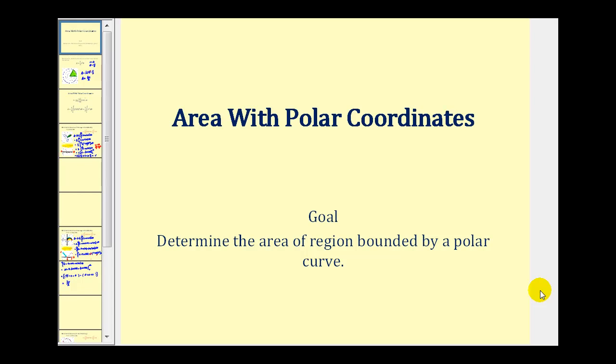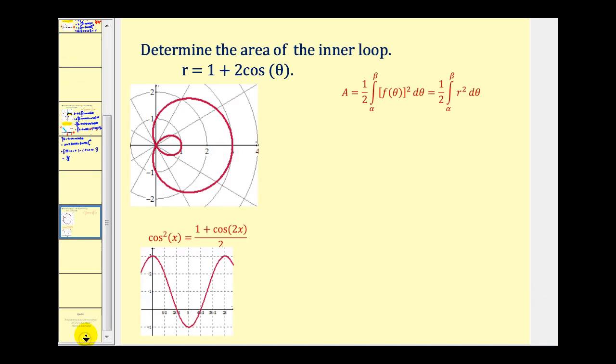Welcome to part three of area with polar coordinates. I thought we should take a look at one more example. Here we want to determine the area of the inner loop of r equals one plus two cosine theta, as we see graphed here.